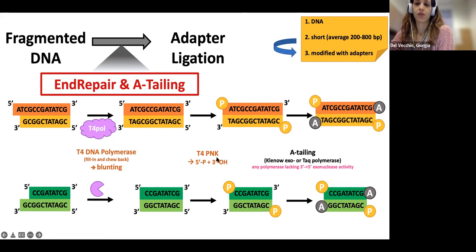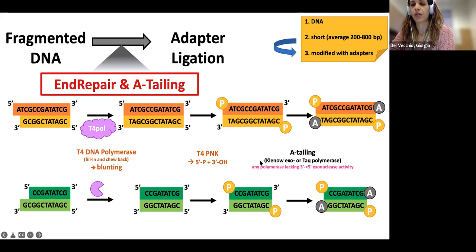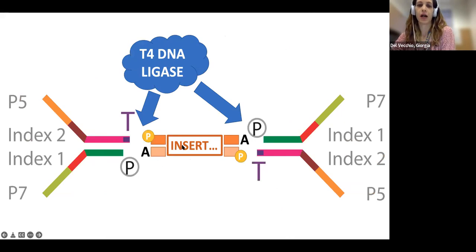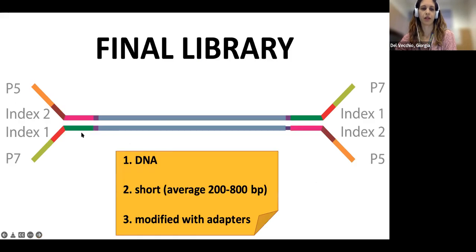Thanks to the T4 polymerase, we can obtain blunt ends. Then we use T4 PNK — a kinase — to add the phosphate at the 5-prime end. And as the very last step, we use Klenow or T4 polymerase to add the A overhang. Now our insert is ready for the ligation step — we have T on the adapter, A on the insert, phosphate at both ends — and we can obtain our final library: DNA that is short and modified with adapters, ready for sequencing.